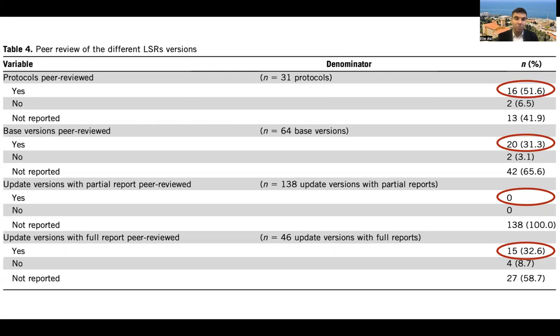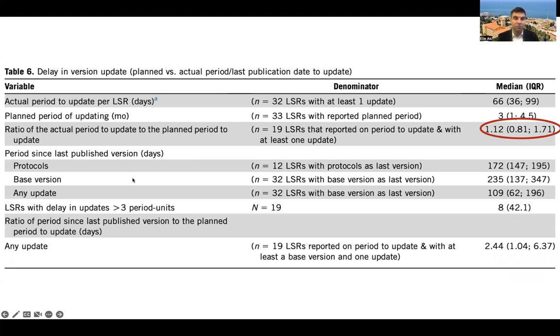When you look at the peer review process, about half of the protocols were peer reviewed, but then the percentages go lower for the base version of the living systematic review, which is the first version that is published. Low percentages of peer review for the partial updates, and when we had full updates, it was also a third for which we had evidence of peer review.